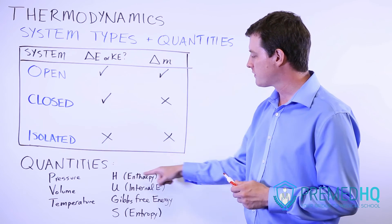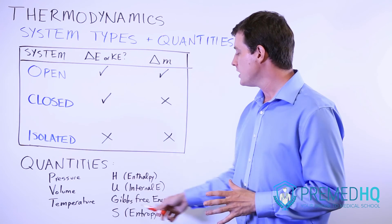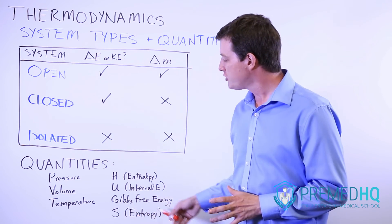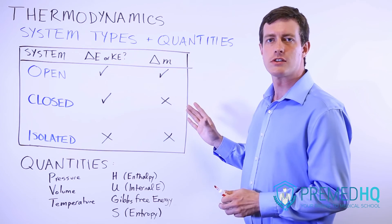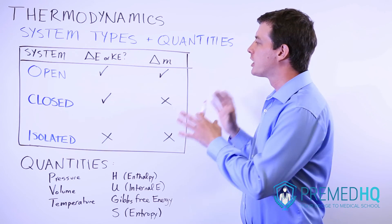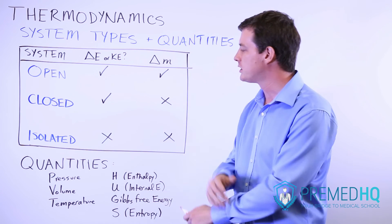H which stands for enthalpy, the internal energy represented by U, Gibbs free energy, and entropy which is represented by S. So now we'll go through some of the laws of thermodynamics and some of the components of these that show how various pieces relate to each other.